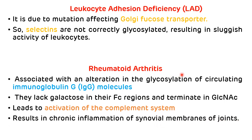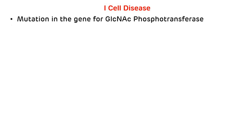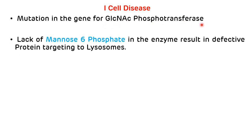Rheumatoid arthritis occurs due to alteration in glycosylation of circulating IgG molecules. The fourth disorder associated with glycoproteins is I-cell disease. It occurs due to a mutation in the gene for N-acetylglucosamine phosphotransferase. As there is a deficiency of mannose-6-phosphate on the enzyme, it results in defective protein targeting to lysosomes.